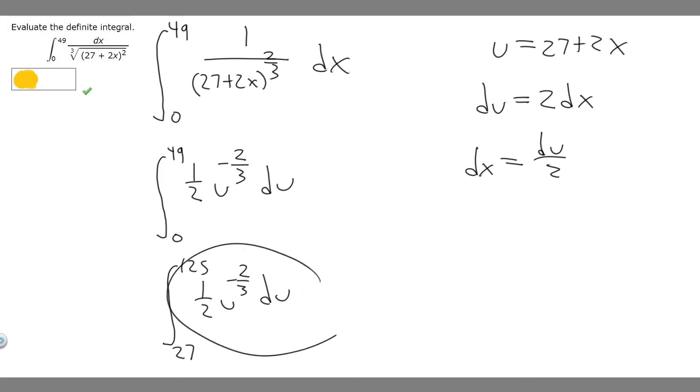Now what we want to do is find the antiderivative of our function on the inside. We have 1/2 times u to the minus 2/3. We do that by adding 1 to our exponent. So minus 2/3 plus 1 is 1/3, and we're dividing by our new exponent, 1/3, and multiply by 1/2.